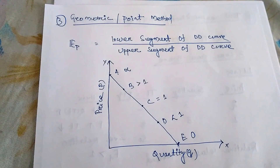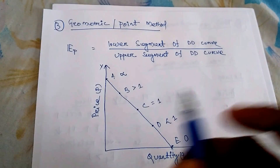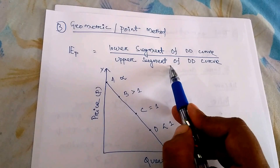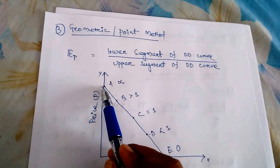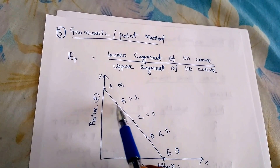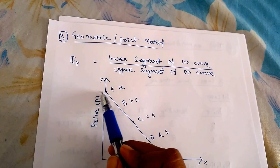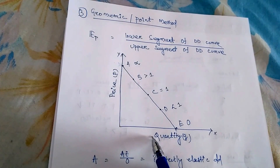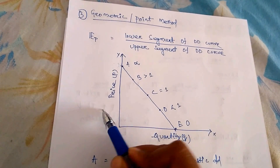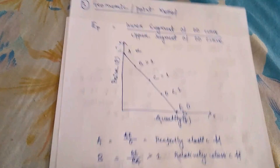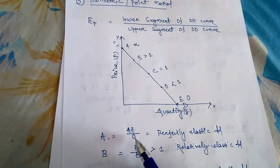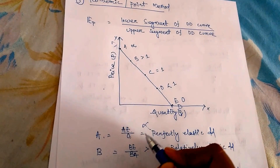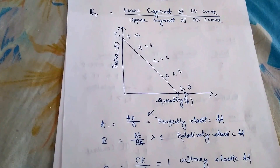The next method is the geometric or point method — also a very important method. Its formula is: Price Elasticity of Demand = Lower segment of the demand curve divided by Upper segment of the demand curve. On a demand curve diagram where X-axis is quantity and Y-axis is price, at point A (the top of the curve), the lower segment is AE and the upper segment is 0 — so AE/0 = infinity. This is perfectly elastic demand.